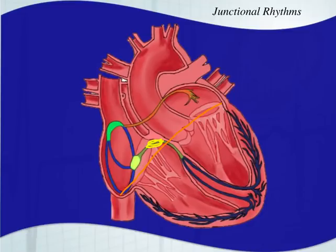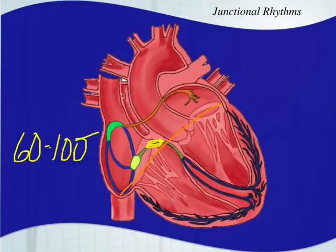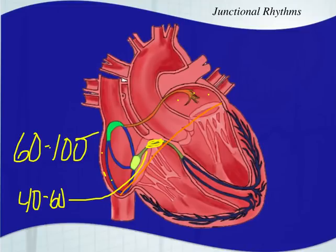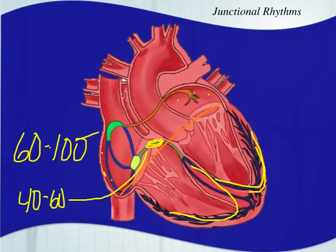It has automaticity and it can create a new pacemaker — it's sort of a backup system. The SA node has an intrinsic rate of about 60 to 100. If that fails, different areas in the atria might be able to take over. The AV junction has an intrinsic rate of about 40 to 60. The ventricles also have their own intrinsic rate through the Purkinje fibers. If one fails, the next could potentially take over, but these areas can also escape and take over when they shouldn't necessarily.